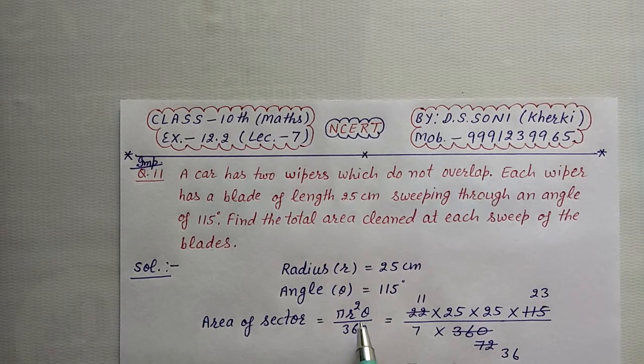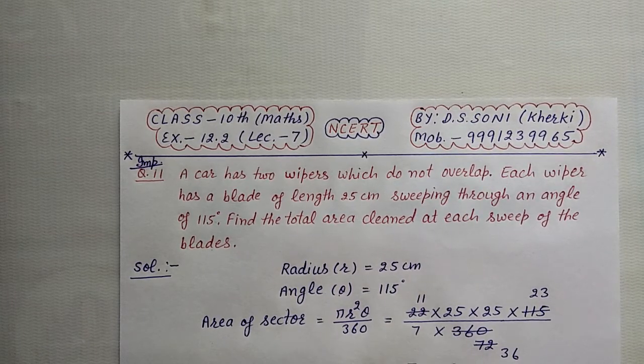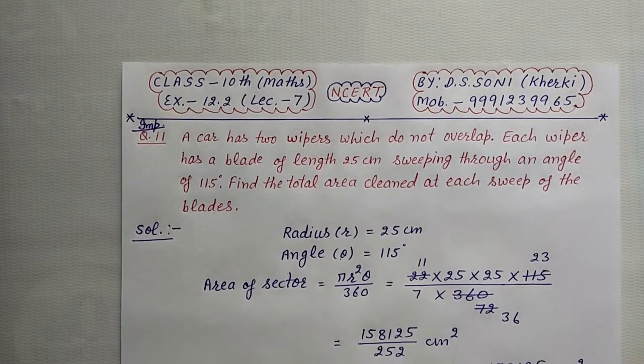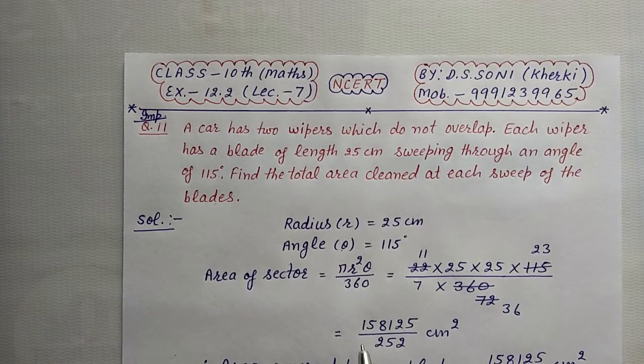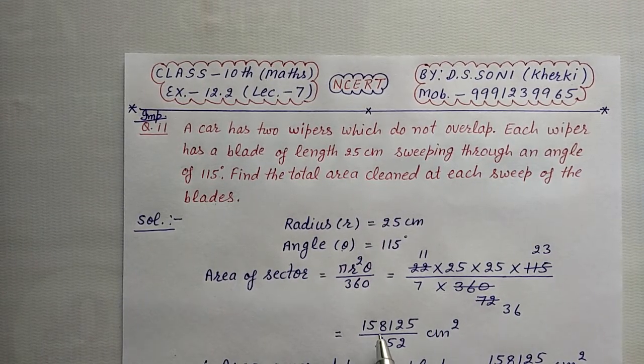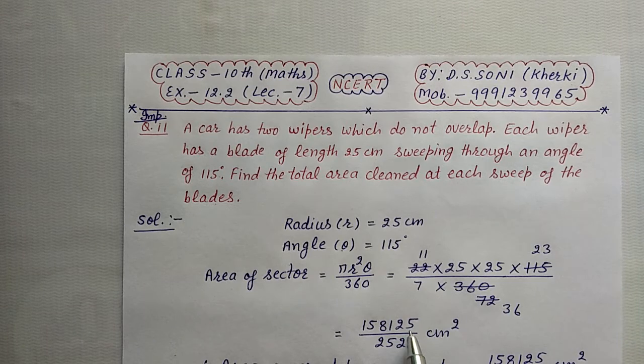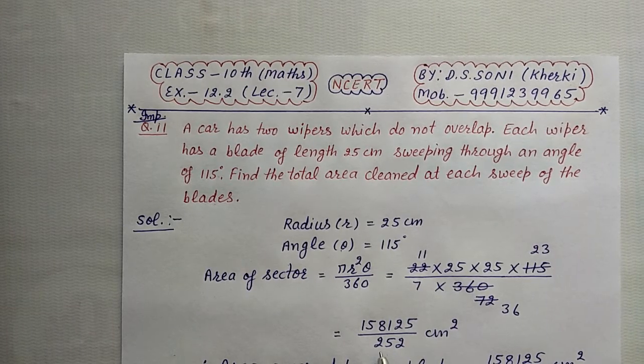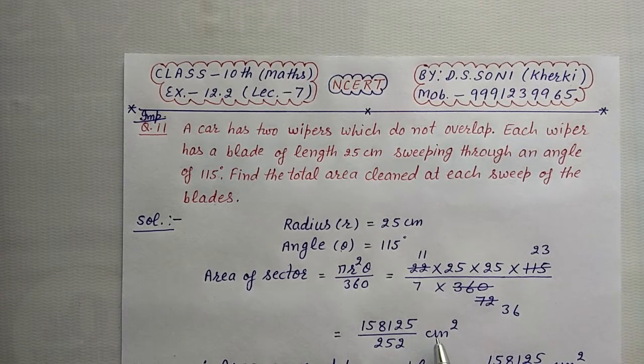Here we put the pi, r, and theta values. The area is 158,125 upon 252 cm squared.